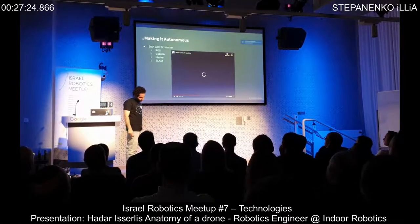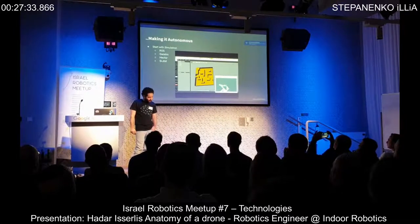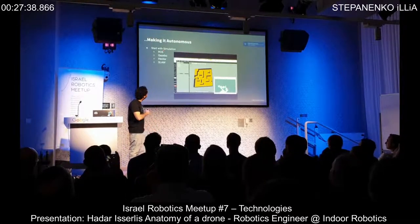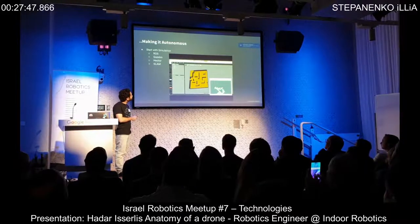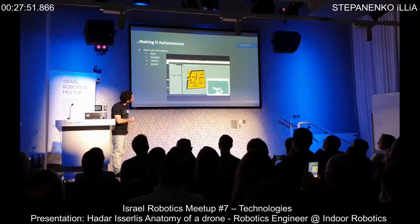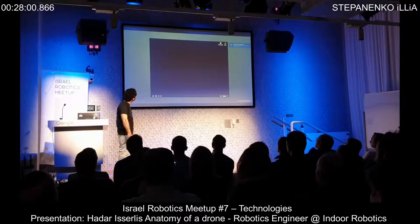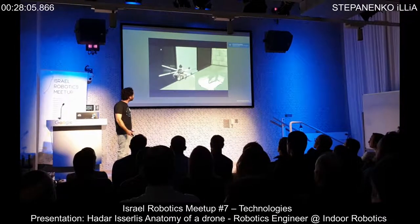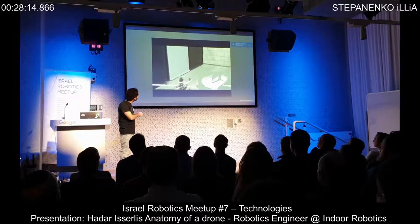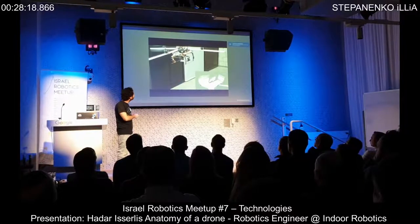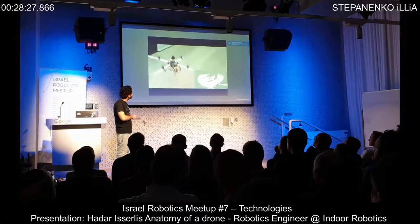One thing you can do before even building the drone is use simulation. If you use ROS — and if not, you can start now — ROS is a great platform for developing robots. Gazebo is a simulation platform. What you see here is the Hector SLAM package in use with a small drone. You can develop your code before ordering or building any hardware. Using RViz, ROS's visualization tool, you can see it has a propeller and lidar on top — it moves and rotates, so you need to account for that.